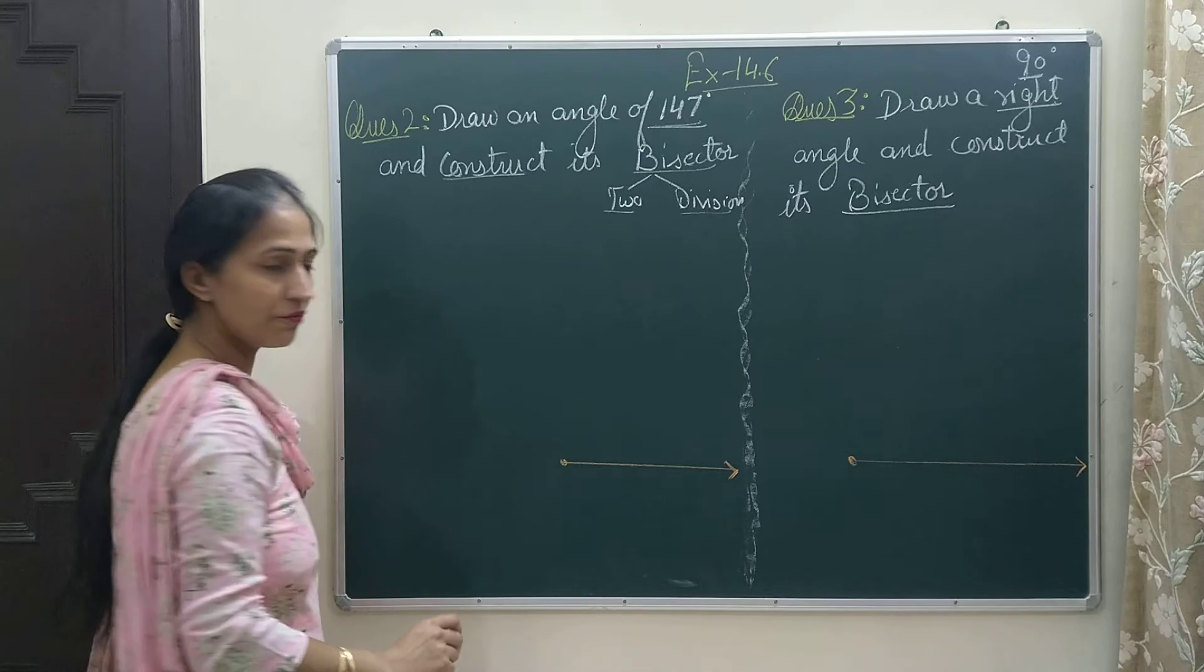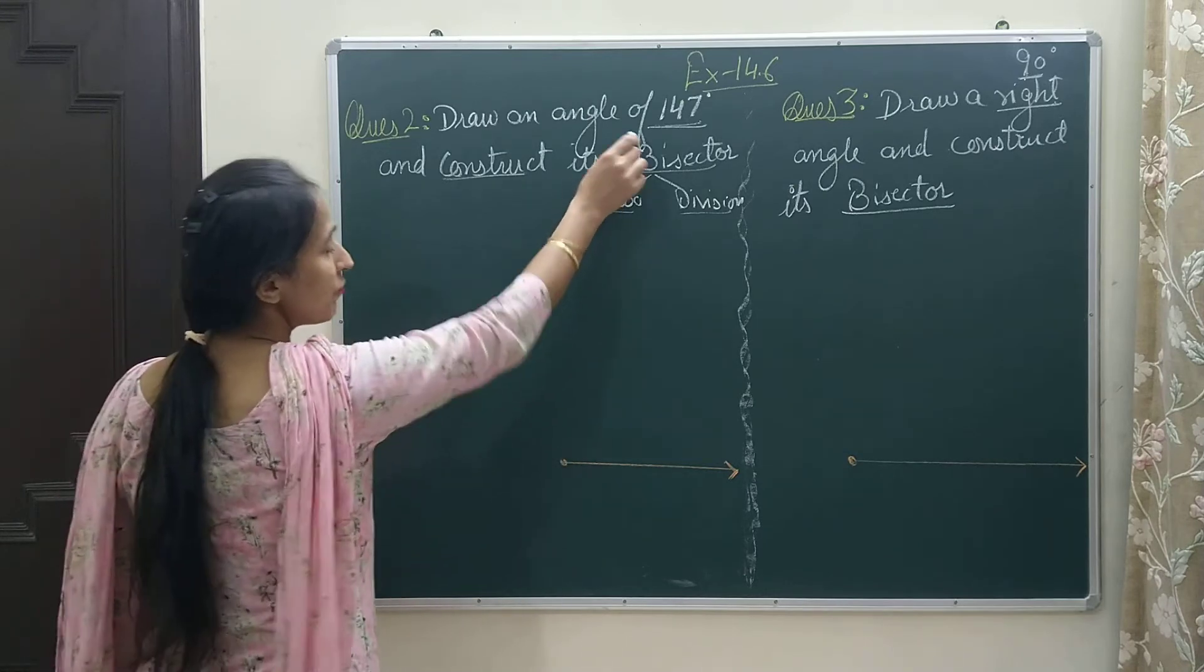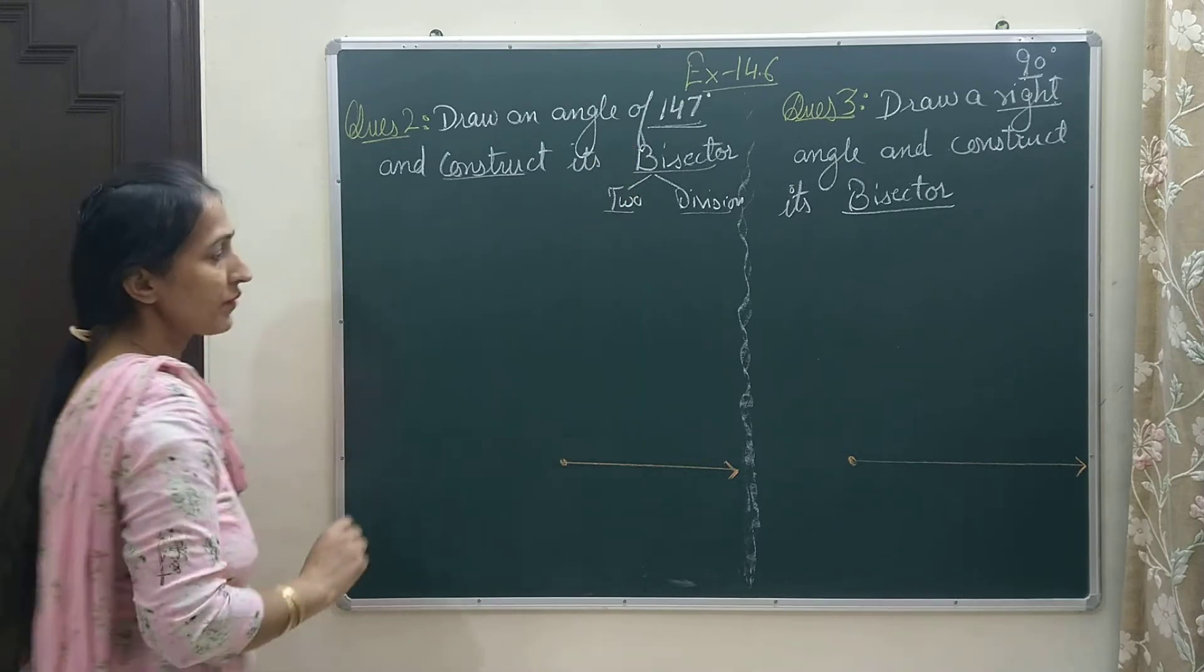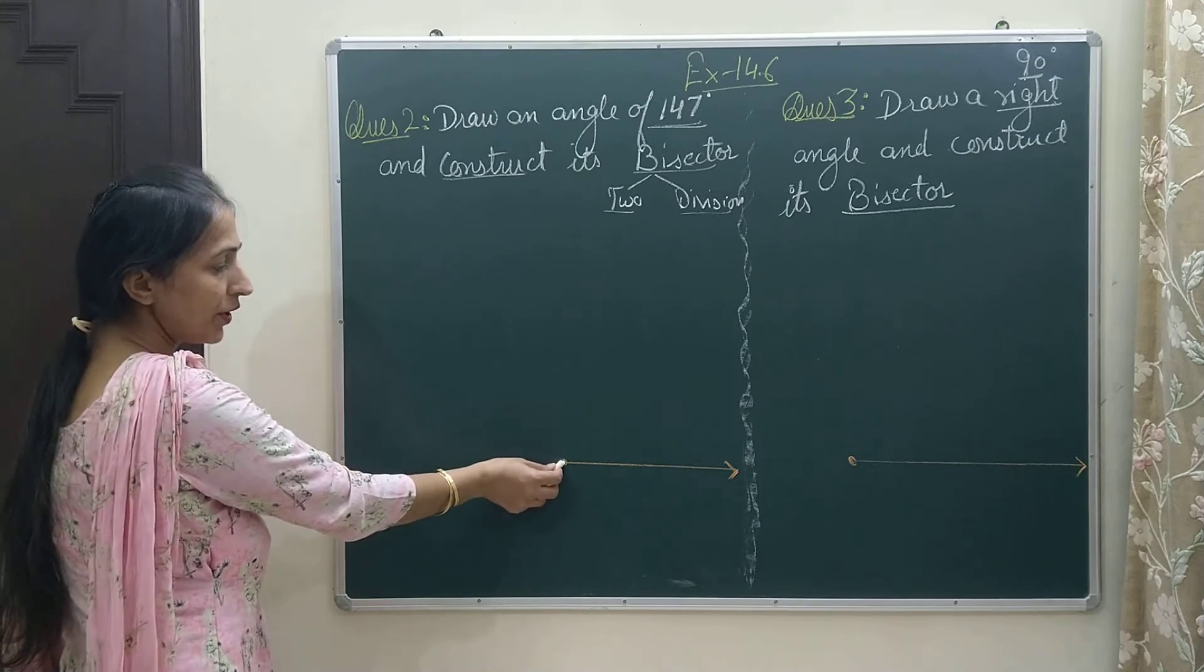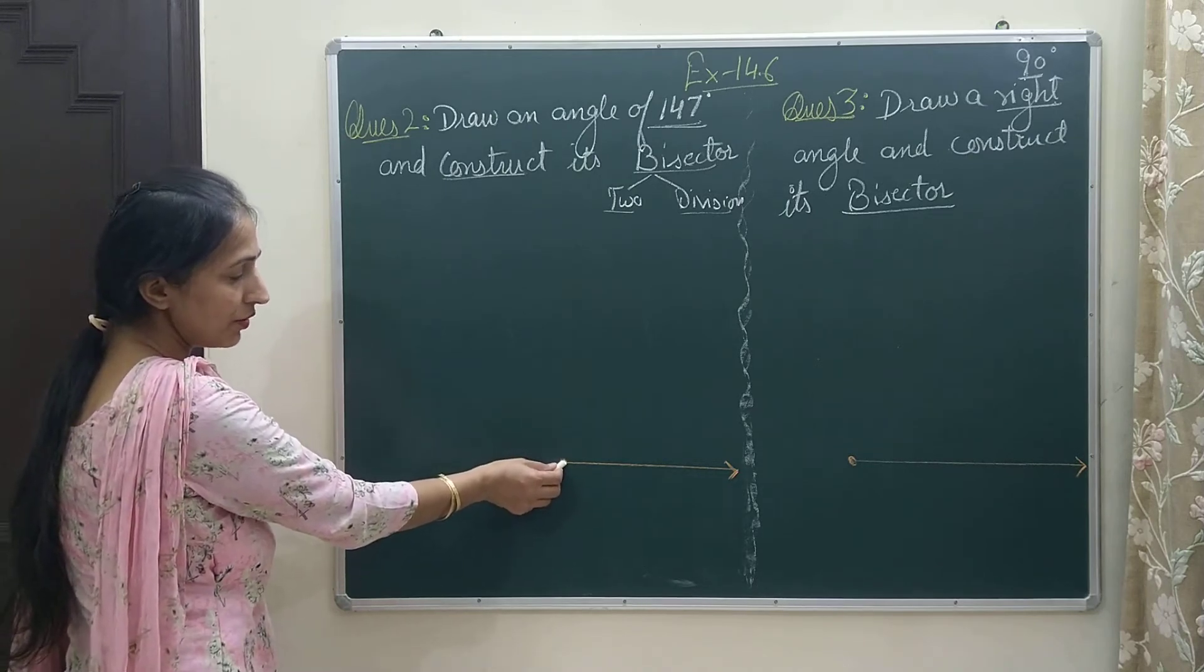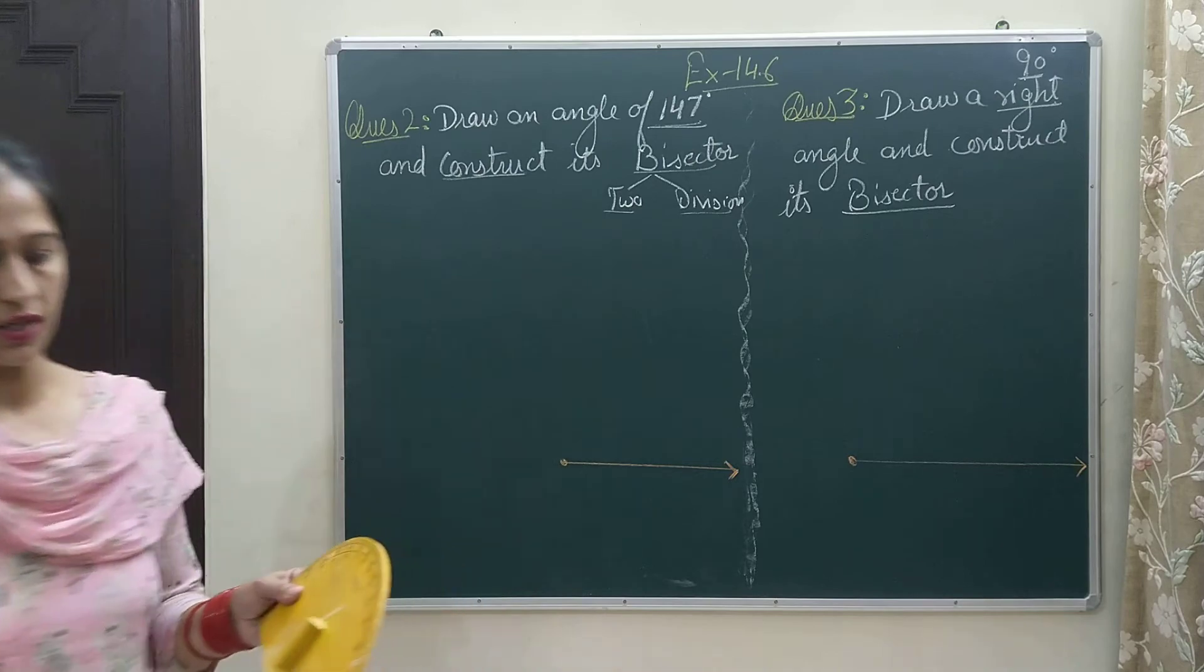Here I have drawn one ray and I am going to mark 147 on the left corner. As I have told you, if I am drawing the angle on the left corner, I will use inner angles.